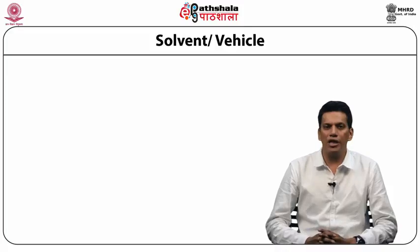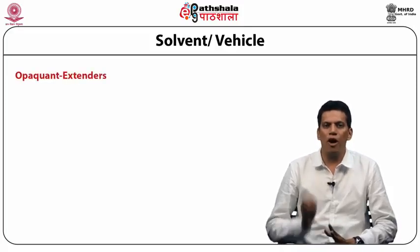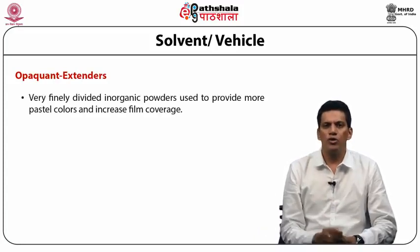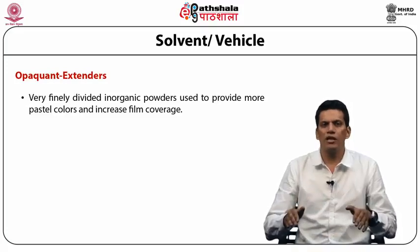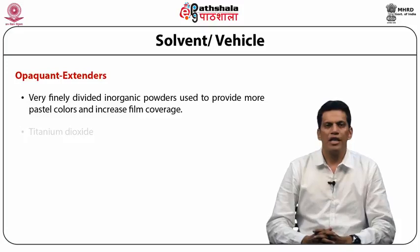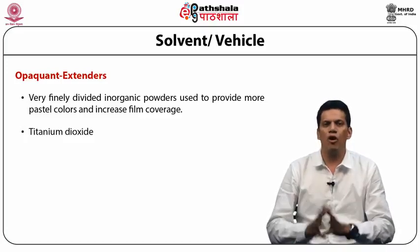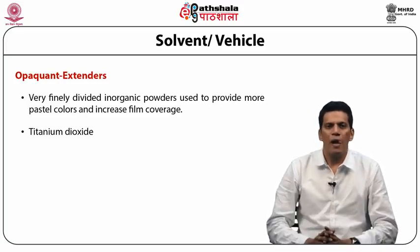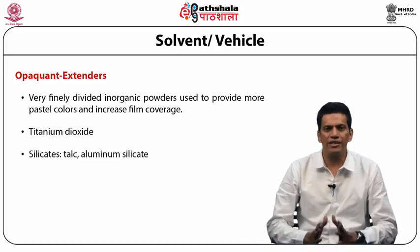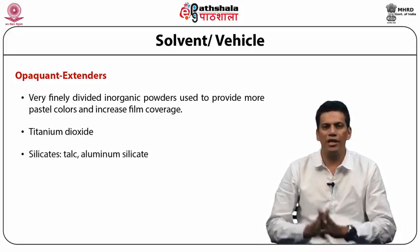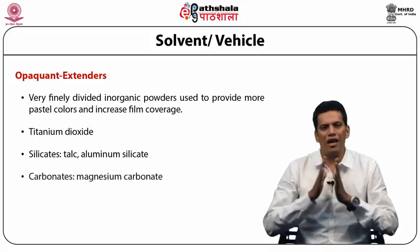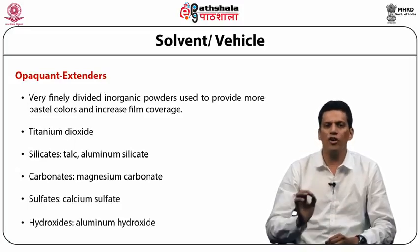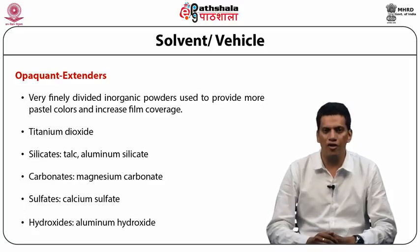The last component is opacifiers. They are very finely divided inorganic powders used to provide more pastel colors and increase film coverage. Titanium dioxide is the backbone of opacifiers — it is widely used and also reflects sunlight. Other examples include silicates such as talc and aluminum silicate, carbonates such as magnesium carbonate, sulphates such as calcium sulphate, and hydroxides such as aluminum hydroxide.